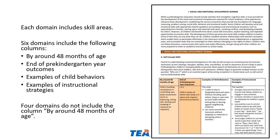Included here is a page from the Pre-K Guidelines. At the top, you'll notice that this is domain one, social and emotional development. Within each domain, the separate skills are listed with an alphabetic indicator. In this example, we have skill A, which is self-concept skills.